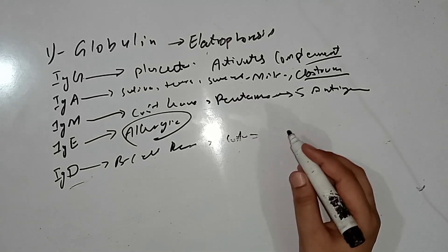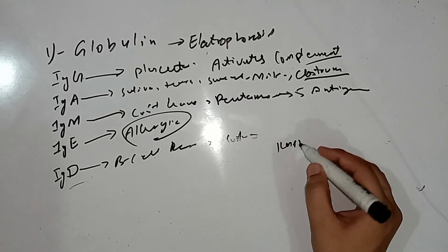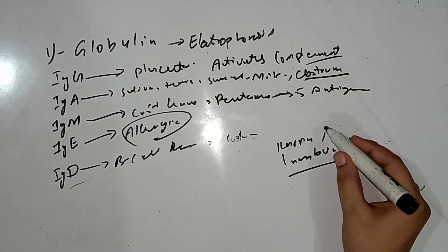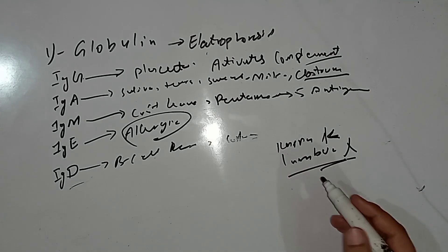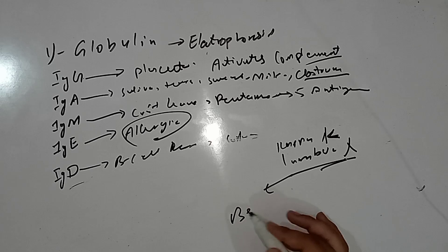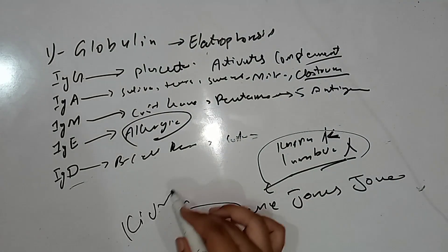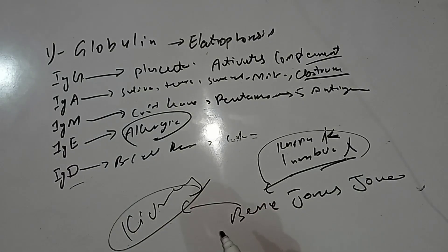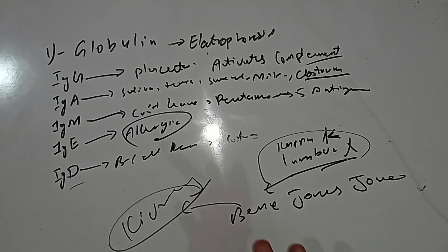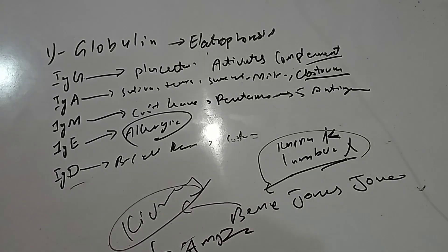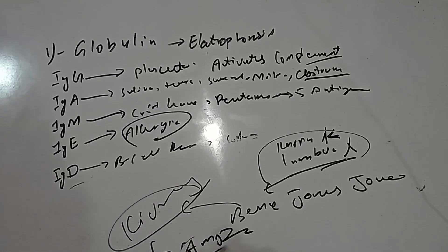The light chains of immunoglobulins are of two types: Kappa (κ) or Lambda (λ), also called Bence Jones proteins. In multiple myeloma patients, the quantity of light chains is increased; they are released by the kidneys into the urine and can damage the kidneys. They can also be deposited in body tissues, a condition known as amyloidosis.